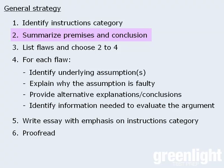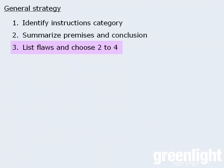Once we have an idea of the general structure of the argument, we're ready for the next step, which is to list some flaws and choose two to four of them to work with. To help us identify flaws, we should first determine whether the author uses any of the common argumentative strategies to draw his or her conclusion.